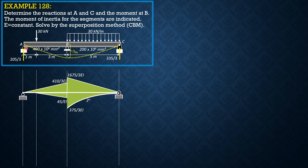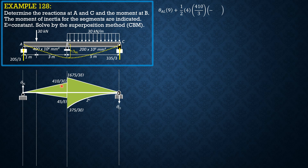The uniform load produces a second-degree diagram. The conjugate beam is still roller and pin supported. We call the slope at A as theta_A due to the load and at C as theta_C due to the load. To solve theta_AL, considering the entire conjugate beam, summation of moments at C equals zero: theta_AL × 9, plus one-half of 4 × (410/3) × (4/3 plus 5 moment arm). EI is removed because it is constant but will be divided in later.